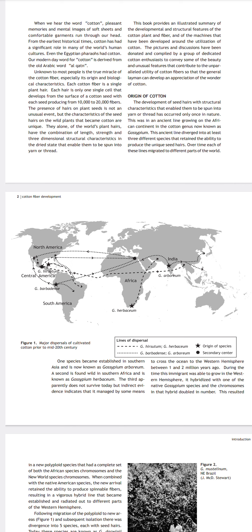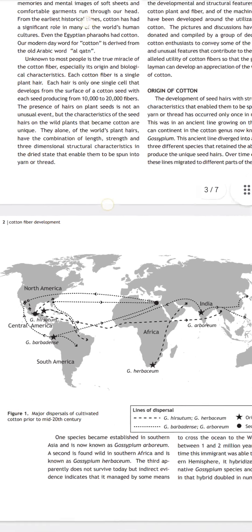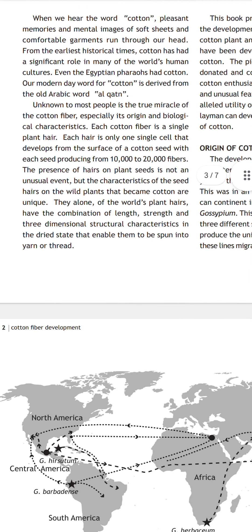Our modern-day word for cotton is derived from an old Arabic word. The old Arabic word is al-qatan. Unknown to most people is the true miracle of the cotton fiber, especially its origin.